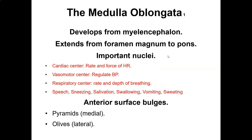The medulla oblongata is part of the brainstem and extends from the foramen magnum to the pons. It is the cardiac center — regulating rate and force of the heart. It has the vasomotor center regulating blood pressure, the respiratory center controlling rate and depth of breathing, and it controls speech, sneezing, salivation, swallowing, vomiting, and sweating. If a patient has damage to the medulla oblongata, all these important functions can be affected. A patient with damage to the medulla oblongata is going to be very difficult to treat.